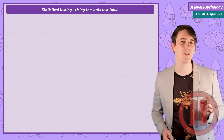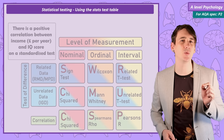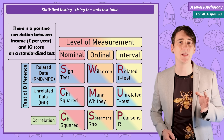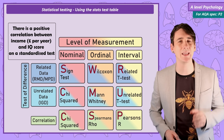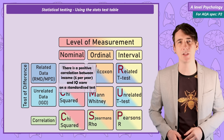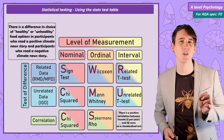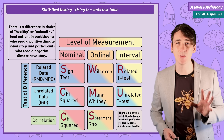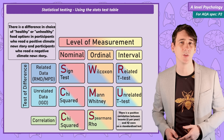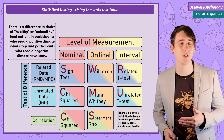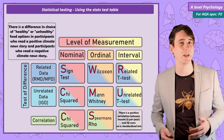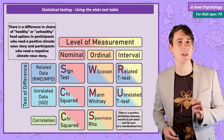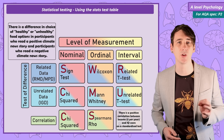Example 1: the researcher will use Pearson's R. It's clearly a correlation and the data for each co-variable is at the interval level of measurement. Example 2: the researcher will use chi-squared. The study is an experiment, so a test of difference; the researcher is using independent groups, so unrelated data; and the level of data used to measure the DV is category, so nominal.